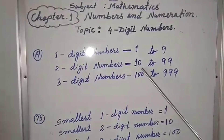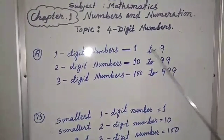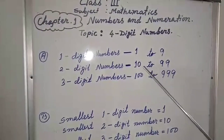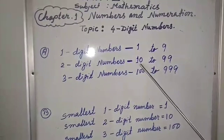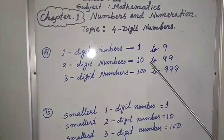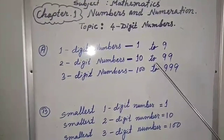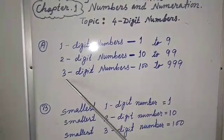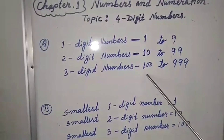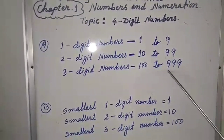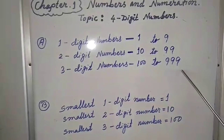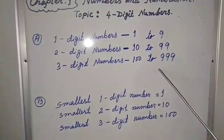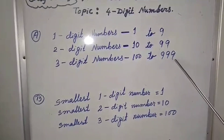Then, 2-digit numbers are from 10 to 99. From 10 to 99, all are 2-digit numbers, like 10, 11, 12, 13, up to 99. And 3-digit numbers are like 100, 101, 102, 103, up to 999.